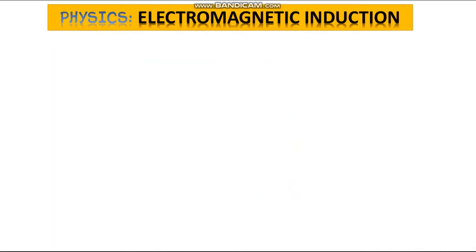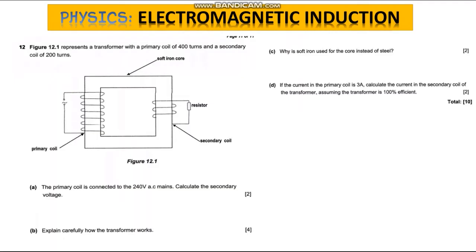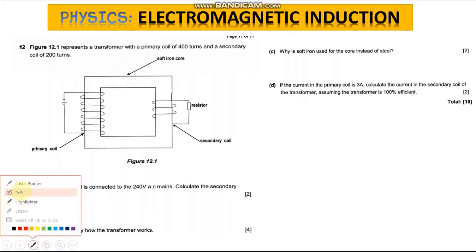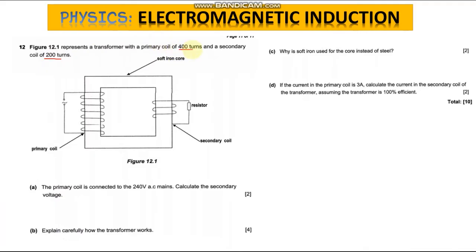In today's lesson we've picked a subtopic in physics and we're going to handle a question under electromagnetic induction, specifically the transformer. The question reads: the figure below represents a transformer with a primary coil of 400 turns and a secondary coil of 200 turns.